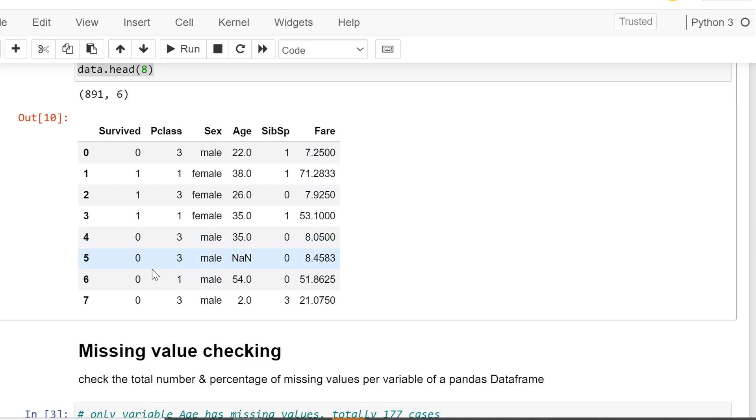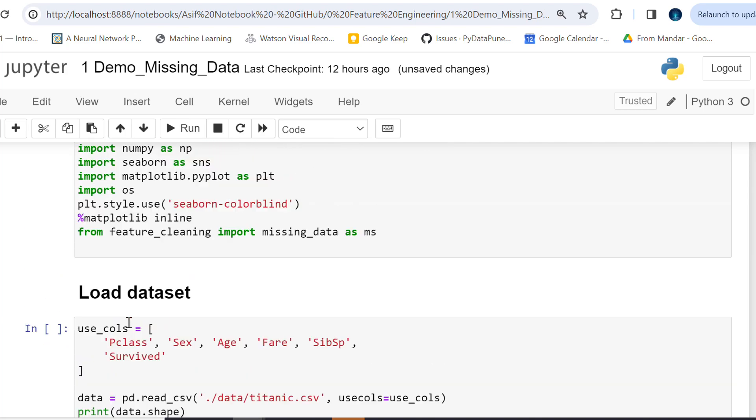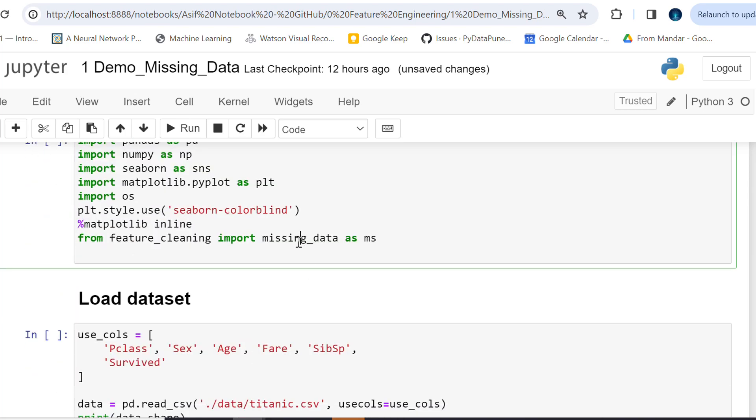So this is where I might need cleaning of data. First of all, let's check the missing values. For missing values I've used ms.check_missing. This is our function and we've created our class which is missing_data. Let me show you how it looks like.